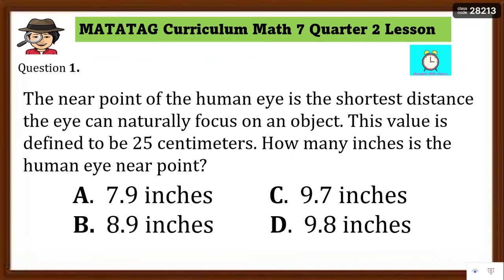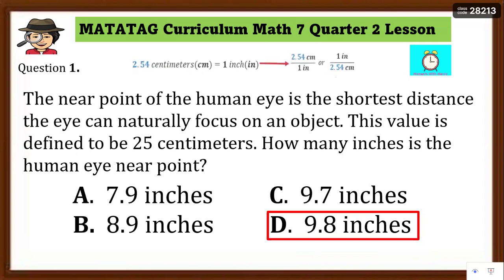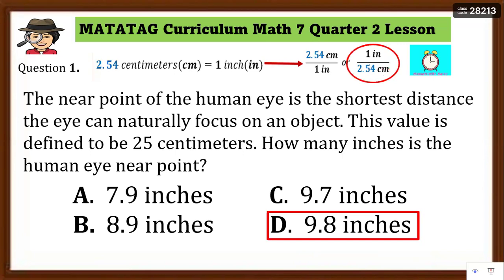Okay, time's up. The answer for number 1 is letter D — 9.8 inches. This is from science: the near point of the human eye is the shortest distance the eye can naturally focus on an object, defined to be 25 centimeters. To find how many inches: use the unit fraction 1 inch over 2.54 cm, so 25 centimeters divided by 2.54 equals 9.8 inches.